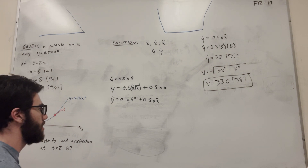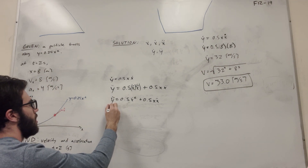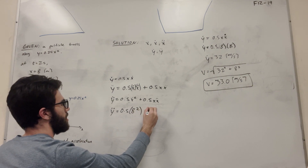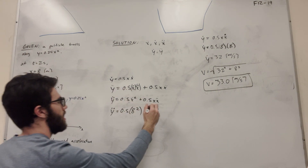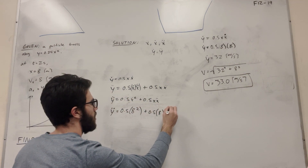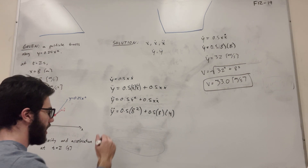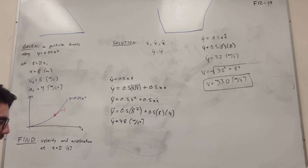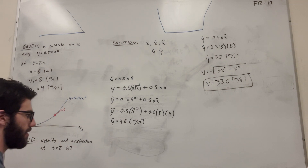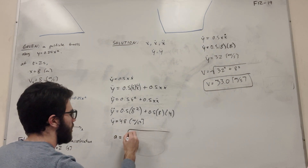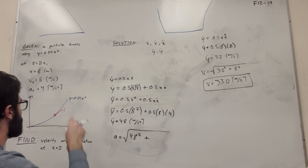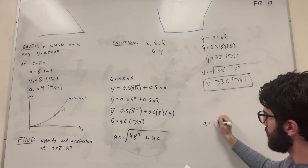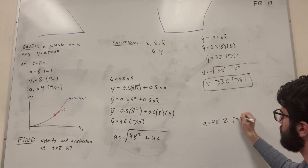Now let's plug in our numbers. x-dot is 8, so we get 0.5 times 8 squared, plus 0.5 times x (which is 8) times x-double-dot (which is 4). This gives us y-double-dot equal to 48. Now we find the magnitude of acceleration: the square root of 48 squared plus 4 squared, which gives acceleration equal to 48.2 meters per second squared.